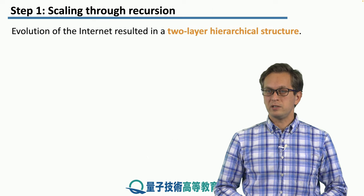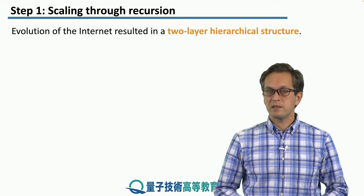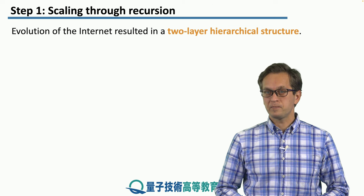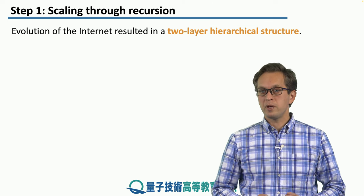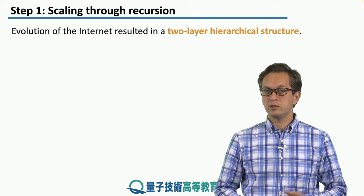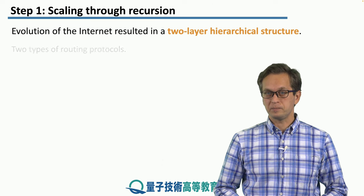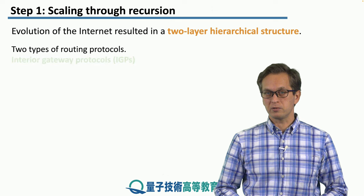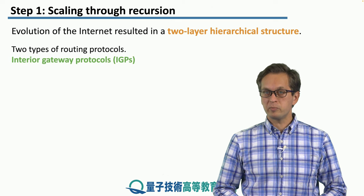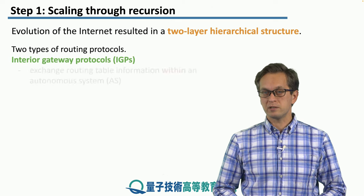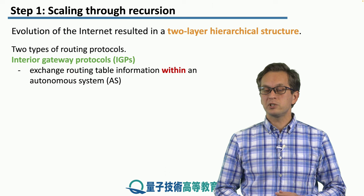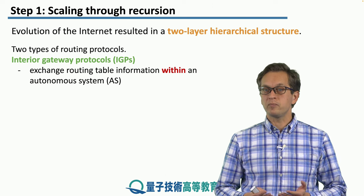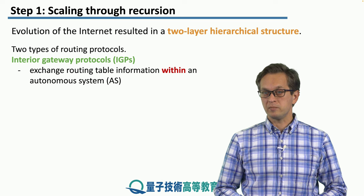Before we start to actually design our quantum internet, let's think about how the classical internet evolved. The main point here is that it evolved in a two-layer hierarchical structure. There are two types of routing protocols. There is the interior gateway protocols, or the IGPs. These are protocols for exchanging routing tables within an autonomous system, an AS.